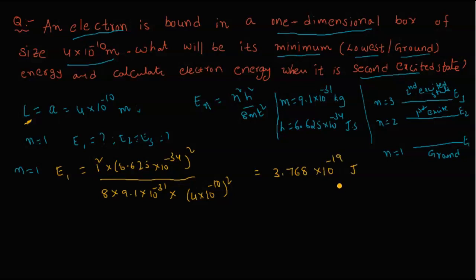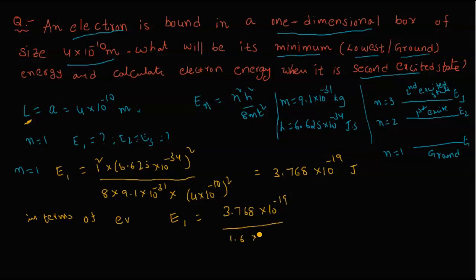If the energy is required in electron volts, we divide by the charge of the electron, which is 1.6×10⁻¹⁹. So E1 = 3.768×10⁻¹⁹ / 1.6×10⁻¹⁹ = 2.352 electron volts.